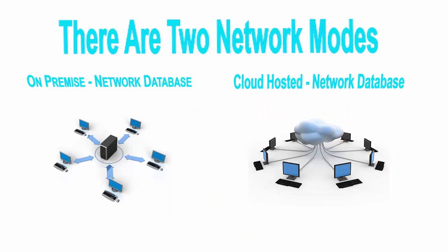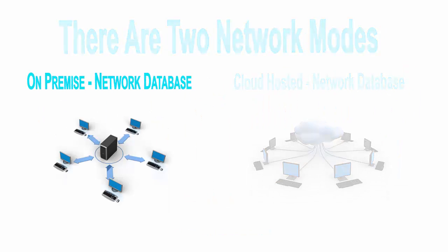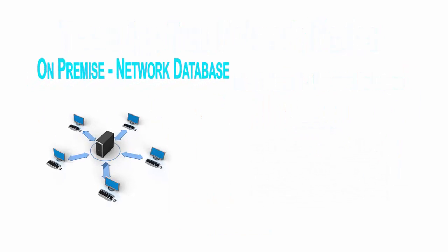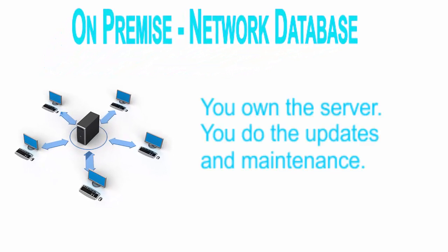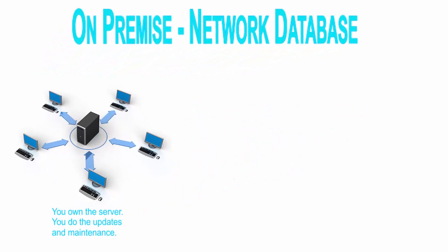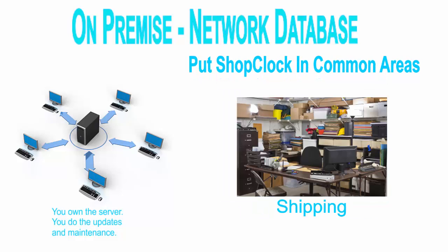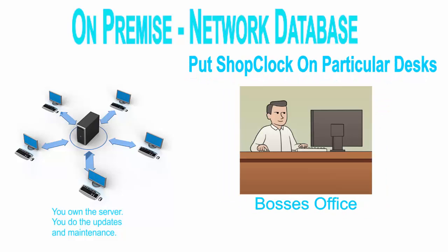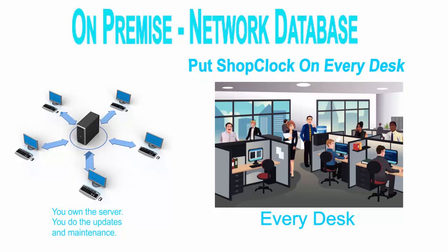The network mode allows many computers to access the database, and it comes in two flavors. In the on-premise network mode, the database is installed on your server and any computer in your local area network can easily access the database. Remote computers will require a special VPN connection to your server.